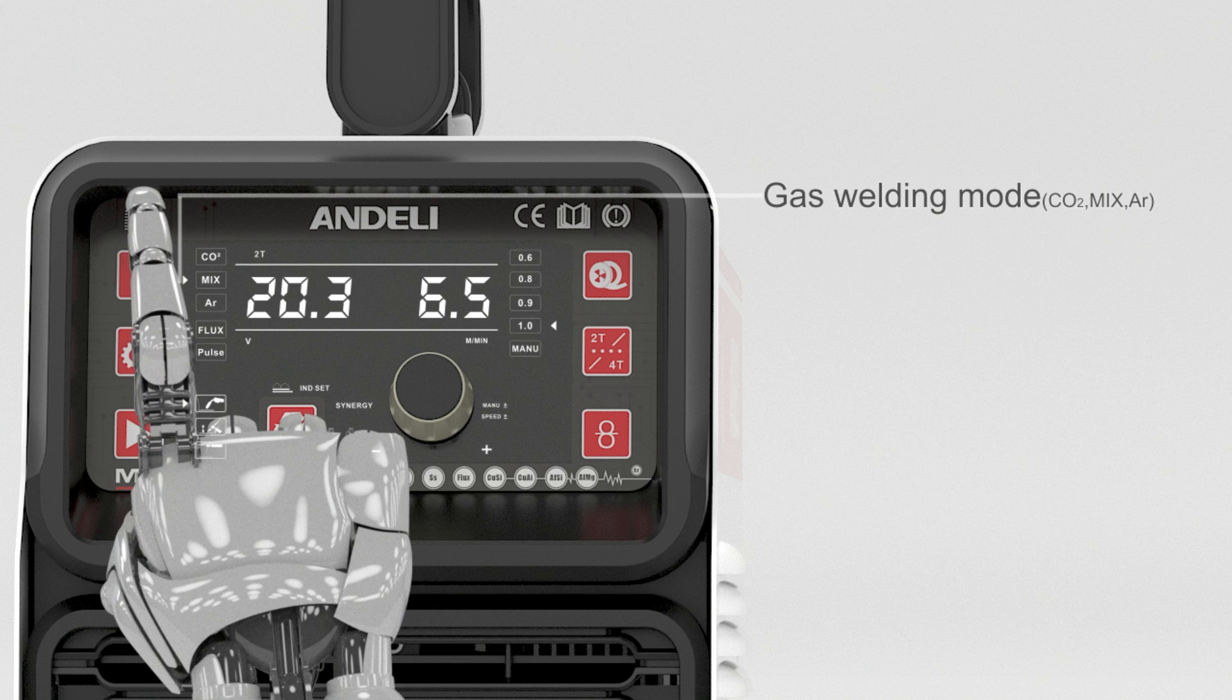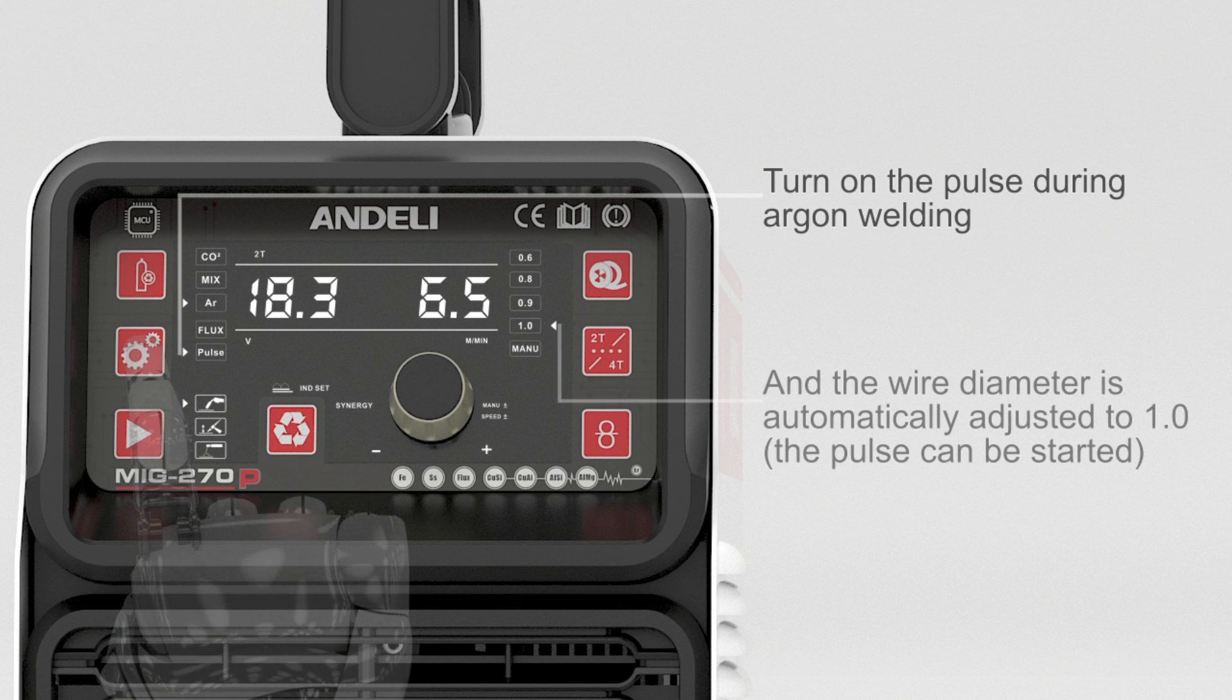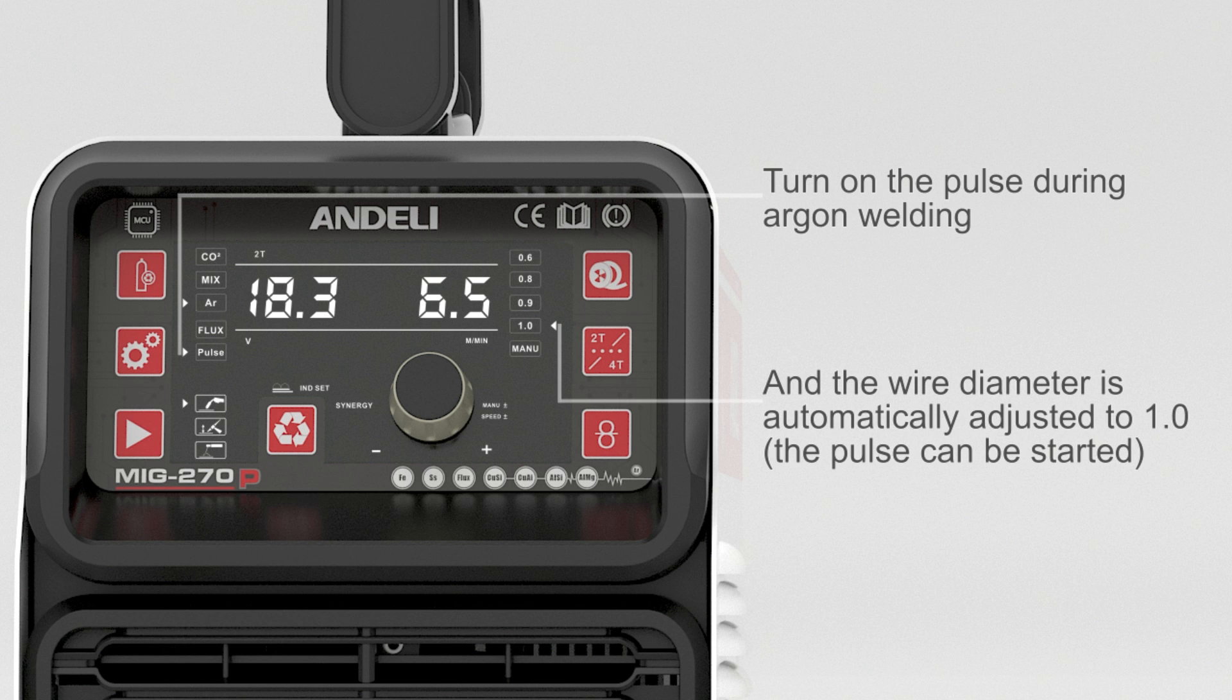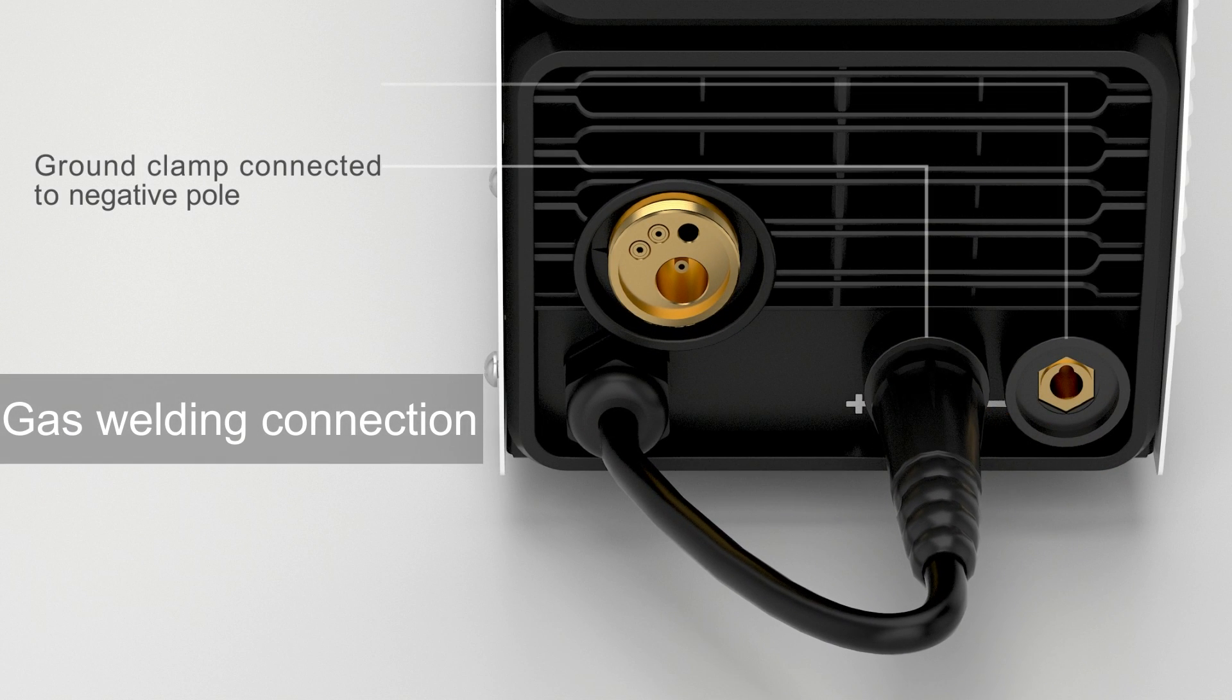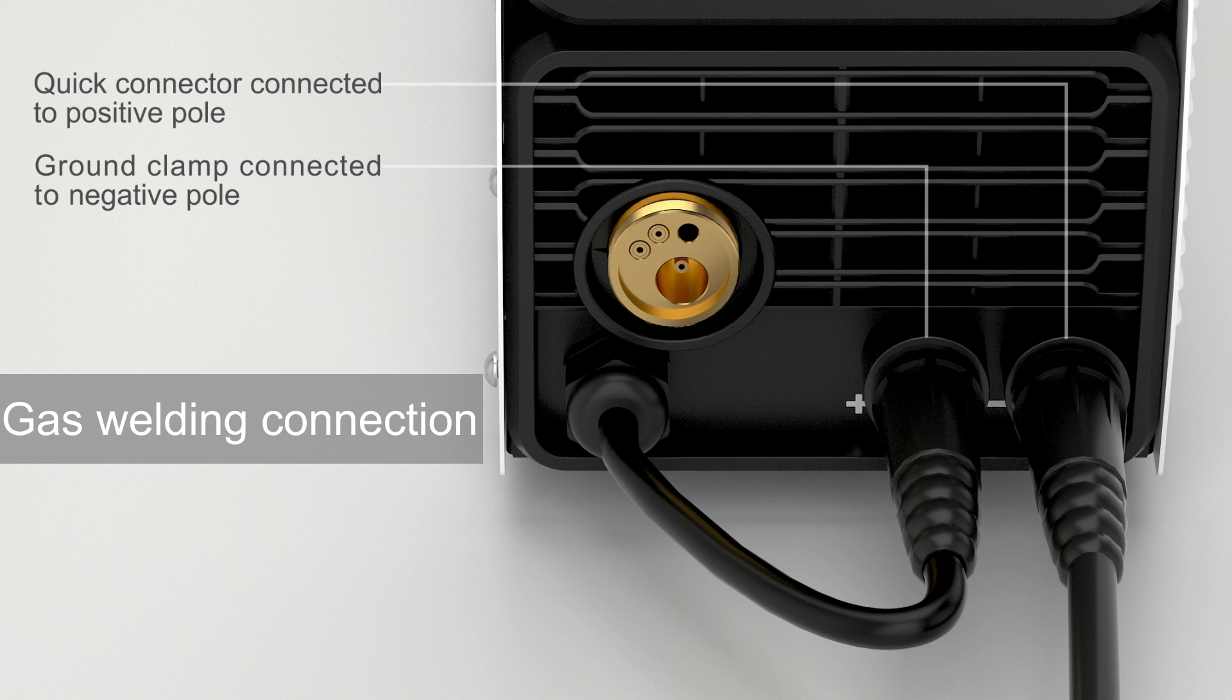Gas welding mode: CO2-MIX or turn on the poles during argon welding. The wire diameter is automatically adjusted to 1.0, then the poles can be started. Gas welding connection: quick connector connected to positive pole, ground clamp connected to negative pole.